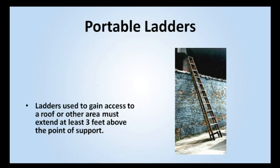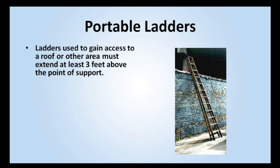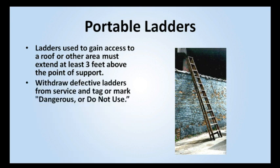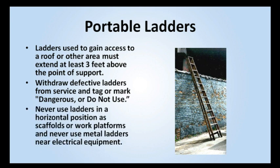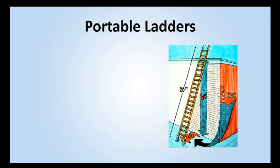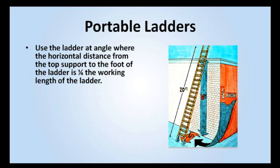Ladders used to gain access to a roof or other area must extend at least three feet above the point of support. Withdraw defective ladders from service, and tag or mark dangerous or do not use. Never use ladders in a horizontal position as scaffolds or work platforms, and never use metal ladders near electrical equipment. Use the ladder at an angle where the horizontal distance from the top support to the foot of the ladder is one quarter the working length of the ladder.